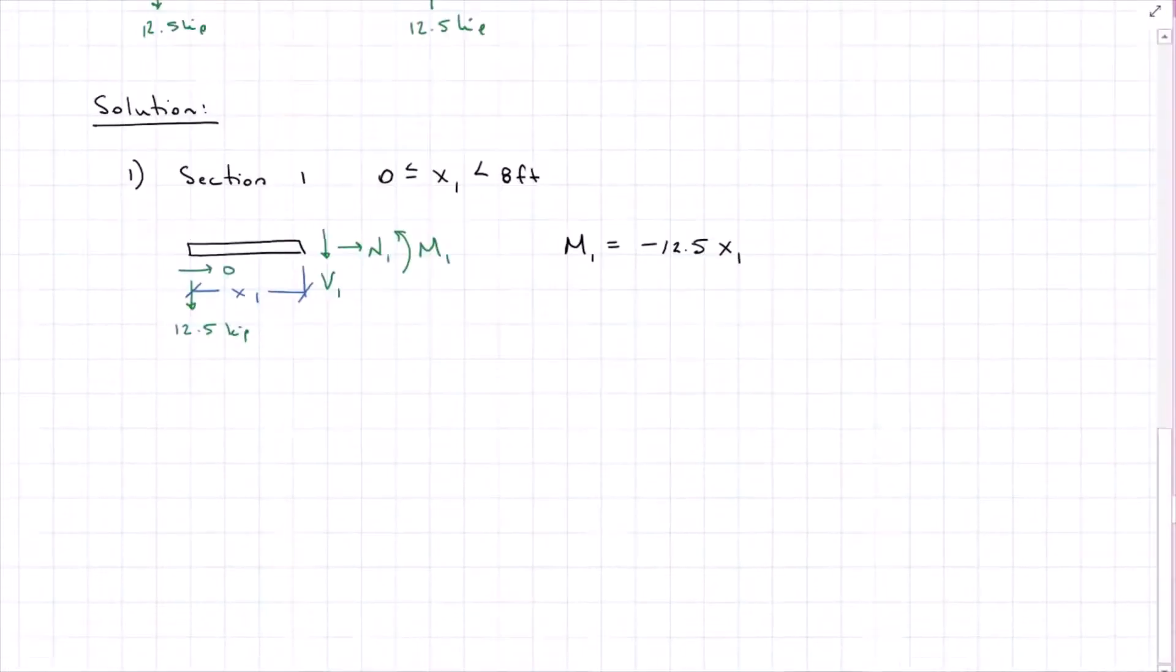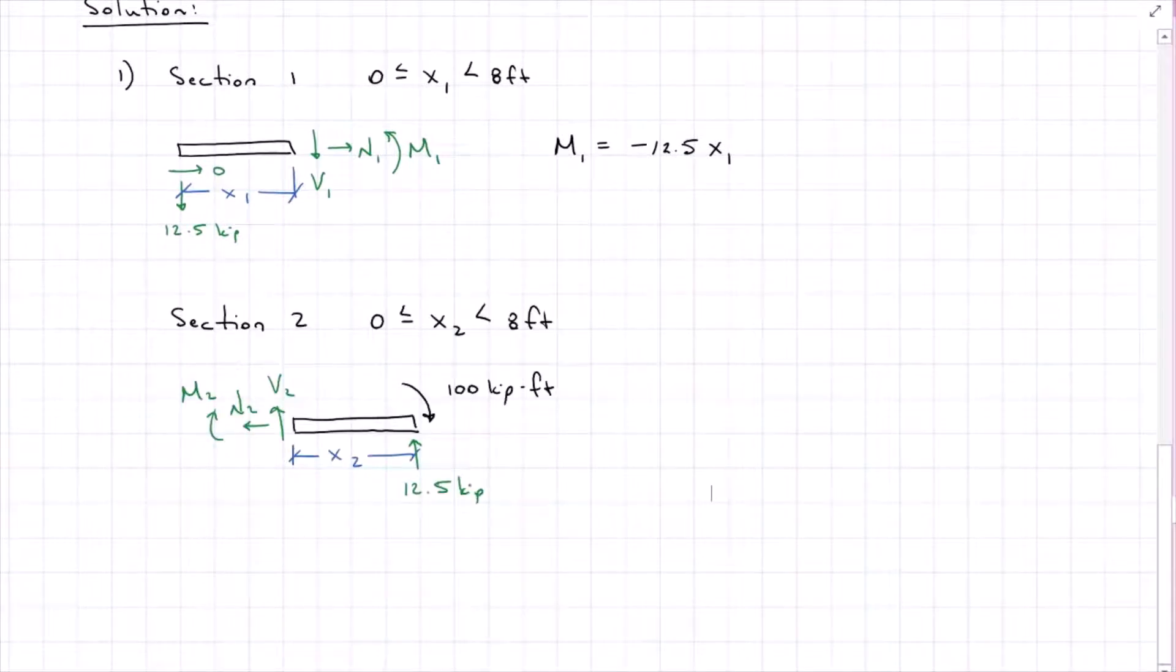Solving for my moment equation, I get it to be negative 12.5 X1. Same thing for section two. For section two, because we took our origin from the right, or from point B, I have my moment applied at B, the reaction BY, my internal forces at that distance, X2, that includes everything from zero up to eight feet. Solving for my moment two equation, I find it to be minus 100 plus 12.5 X2.